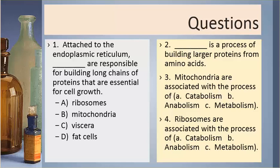Number one. Attached to the endoplasmic reticulum, blank are responsible for building long chains of proteins that are essential for cell growth. A. Ribosomes. B. Mitochondria. C. Viscera. D. Fat cells.